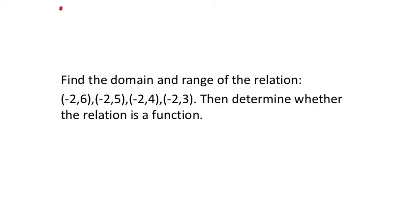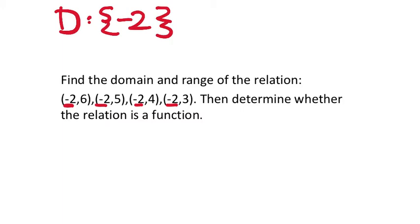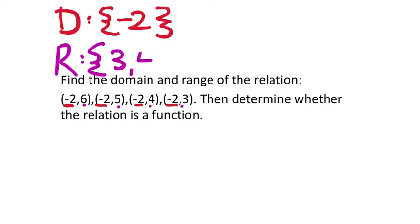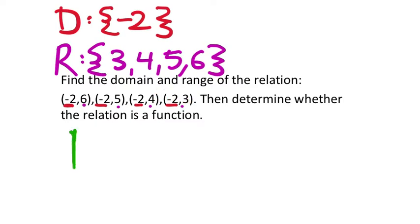For the next one — domain and range, is it a function? The domain has only negative 2 repeated four times, so the domain is just {negative 2}. The range, from least to greatest, is {3, 4, 5, 6}. Is this a function? You put in negative 2 and get negative 6, but next time it spits out 5, then 4, then 3. Not a function.